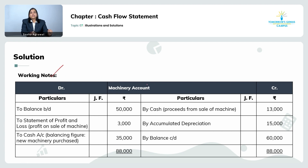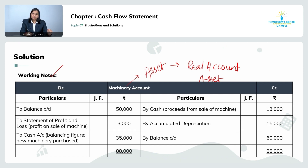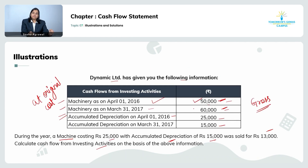Let's check the solution. We will prepare the machinery account as a working note. Machinery is an asset, and assets come under real account. The rule of real account is: debit what comes in, credit what goes out. Since machinery is an asset, the balance of the machinery account will be a debit balance. So the opening balance will always be on the debit side. The opening balance was given as 50,000 as on 1st April 2016.